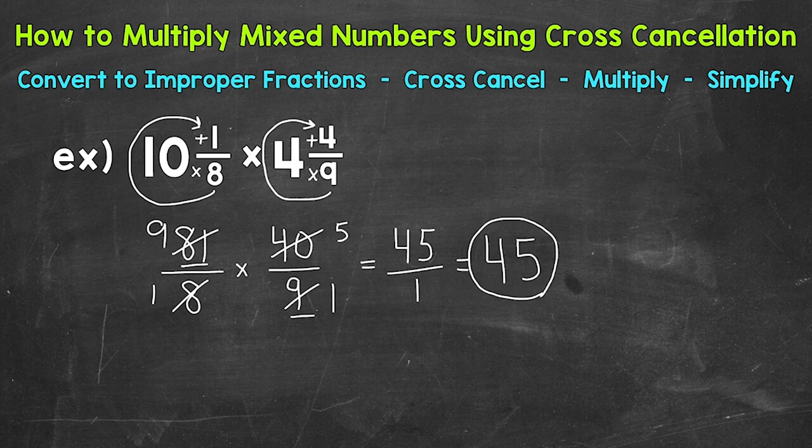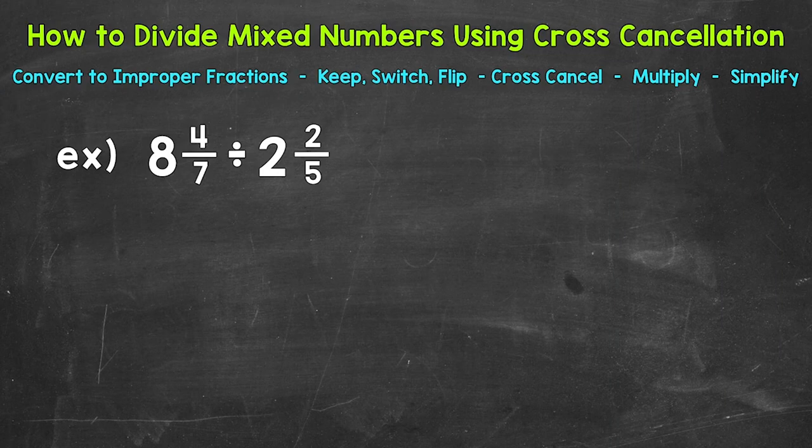So there's how to use cross cancellation when multiplying mixed numbers. Let's move on to dividing mixed numbers. Let's jump into our example where we have 8 and 4 sevenths divided by 2 and 2 fifths.